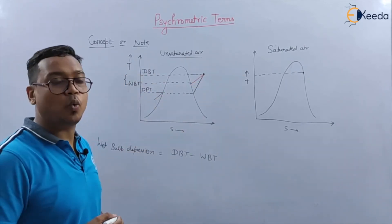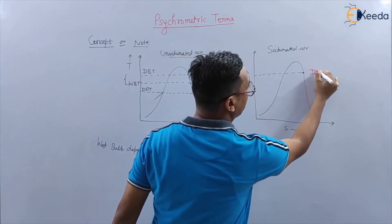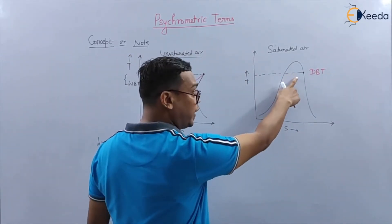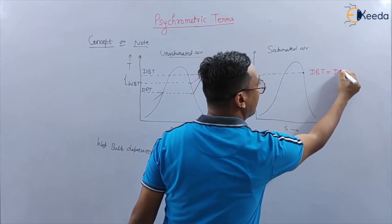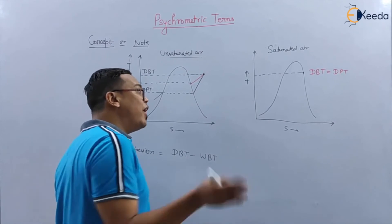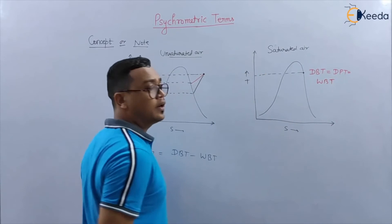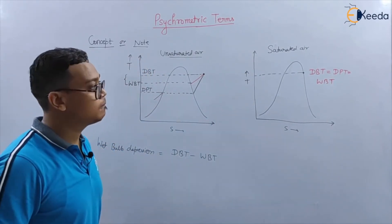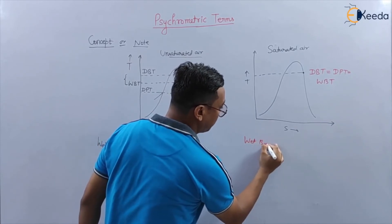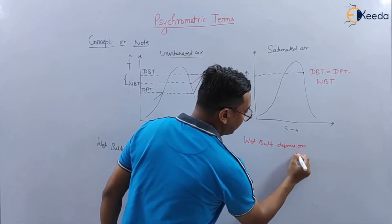For saturated air, at that saturation point, the dew point temperature equals the dry bulb temperature. The wet bulb temperature is also equal to the dry bulb temperature. So in this case, the wet bulb depression is zero.